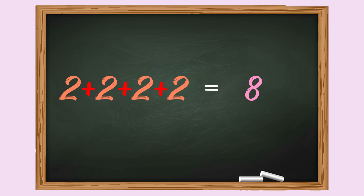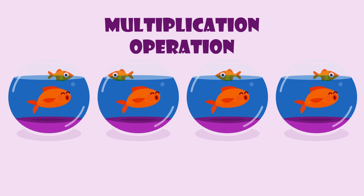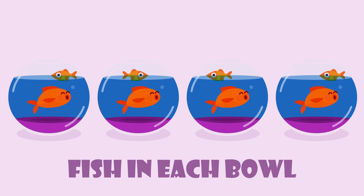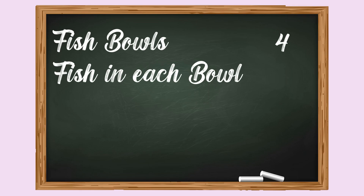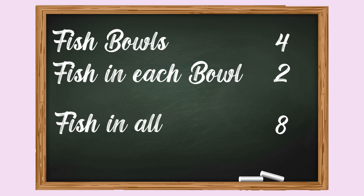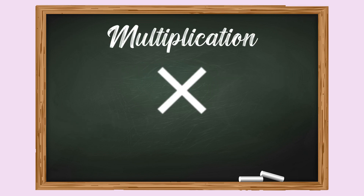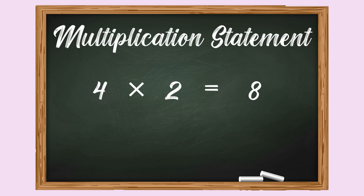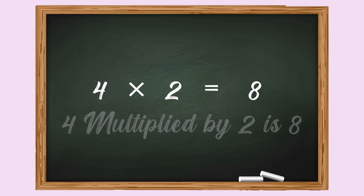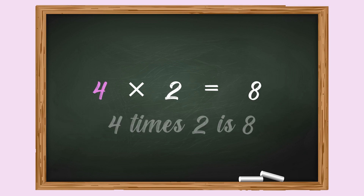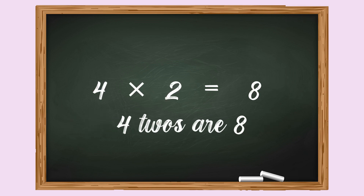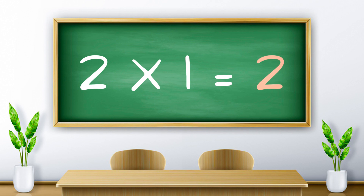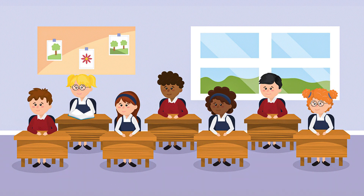Here we repeatedly add two, four times — this is called the multiplication operation. Multiplication is repeated addition. We can do this multiplication operation in an easier way. There are four fish bowls; each bowl has two fish in it. Four times two is eight, so there are eight fish in all. The symbol 'x' is the symbol of multiplication. We write this as the multiplication statement: four multiplied by two is eight, or four times two is eight, or four twos are eight. Now let's learn the table of two.